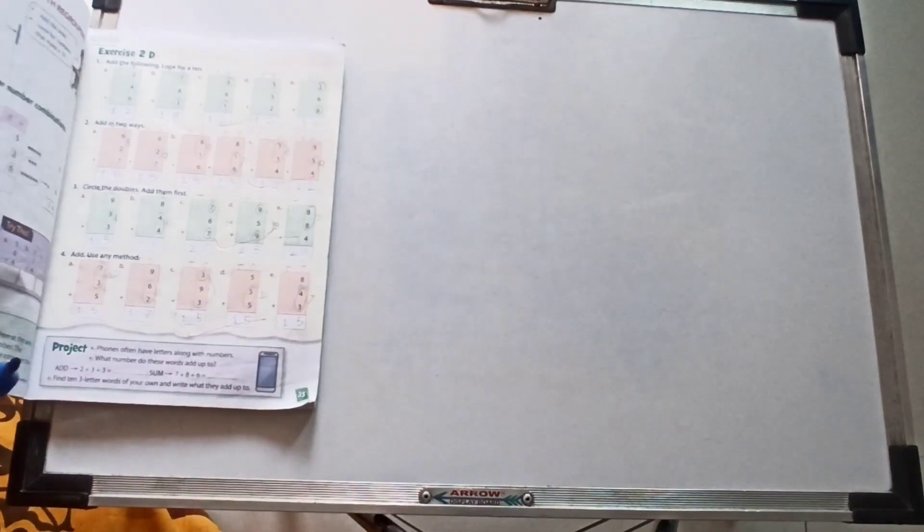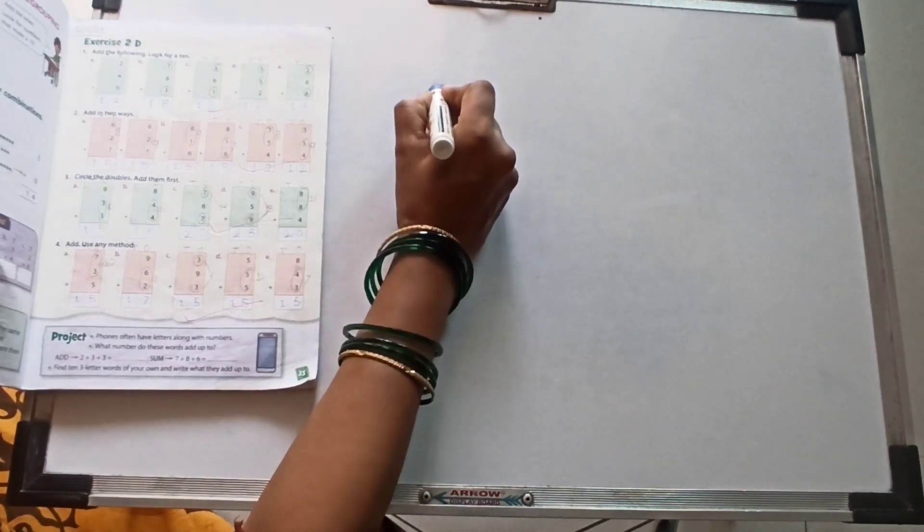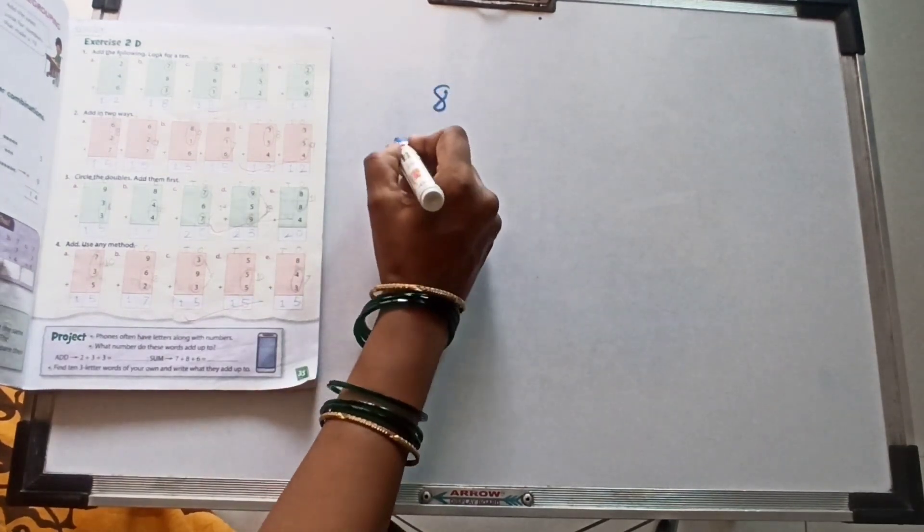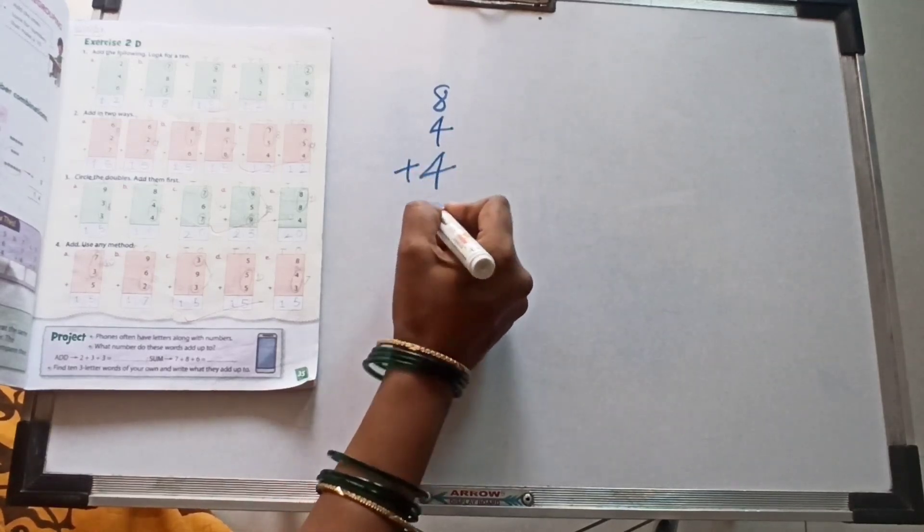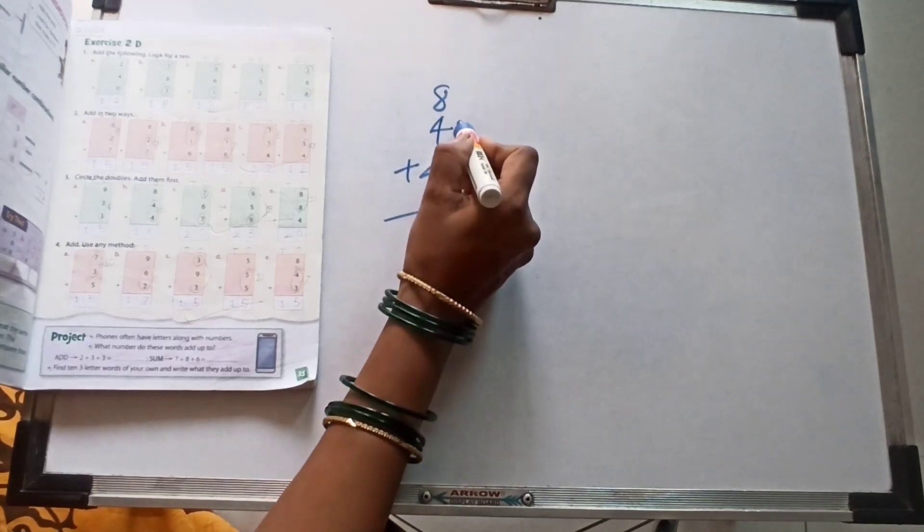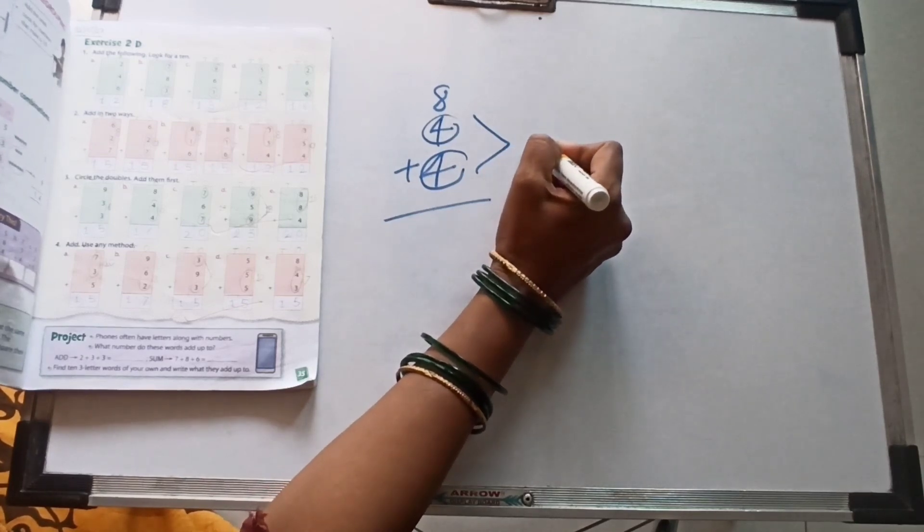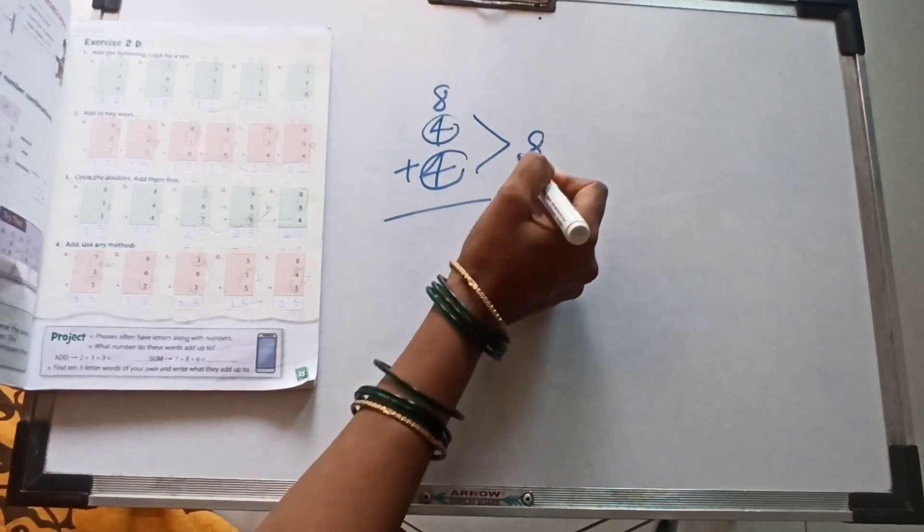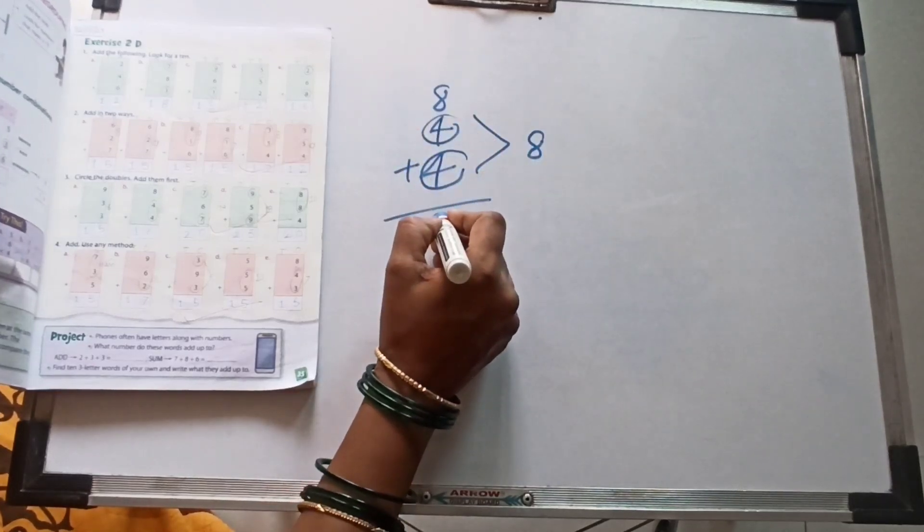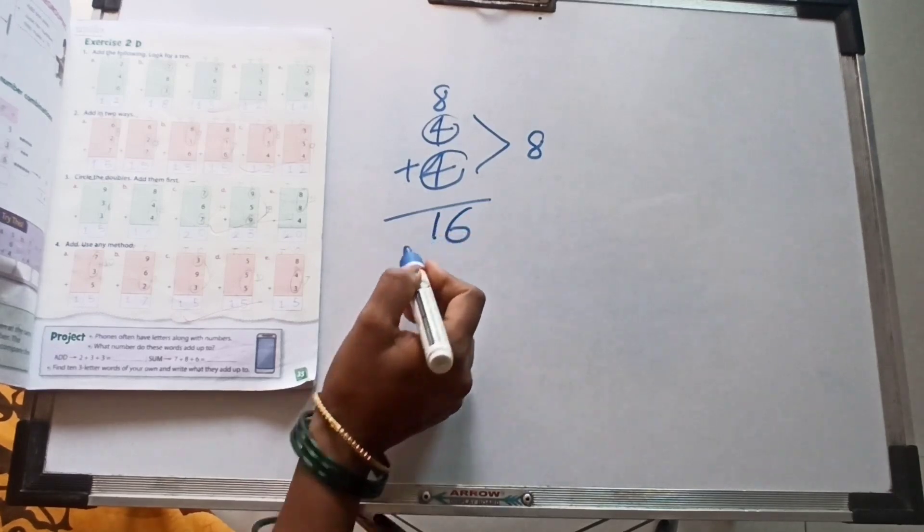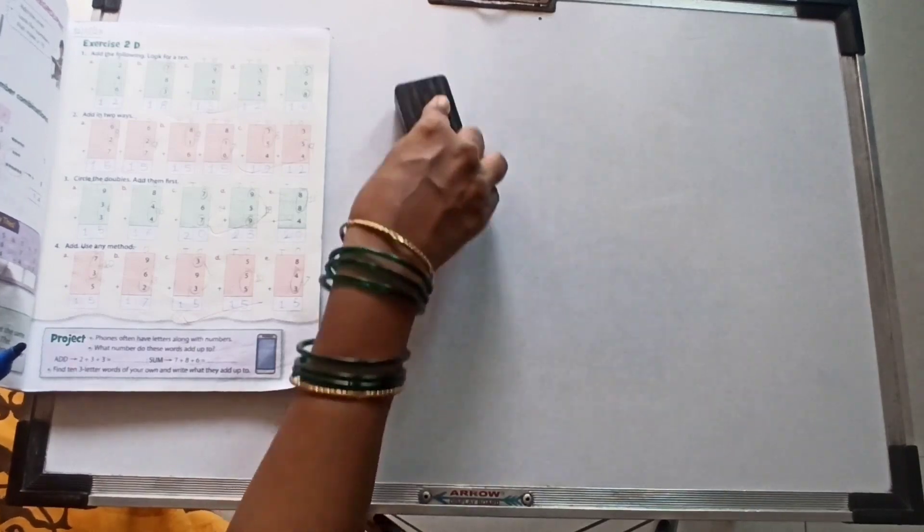Now next: 8 plus 4 plus 4. Which numbers are same? Second one and third one. 4, 4 twos are 8. 4 plus 4, 8. And 8 plus 8, 8 twos are 16. This time, if you have a budget table, you can easily take out your answers.